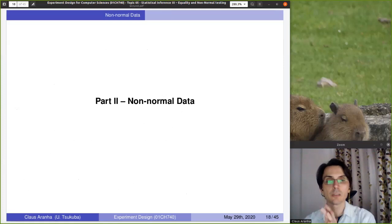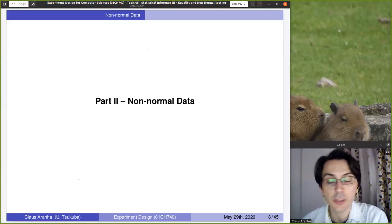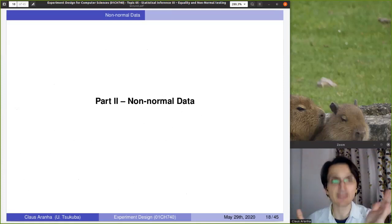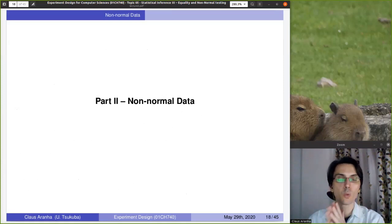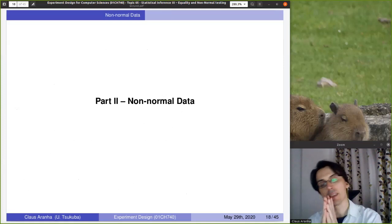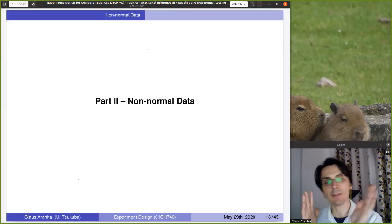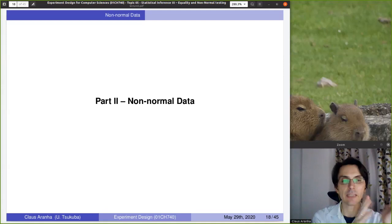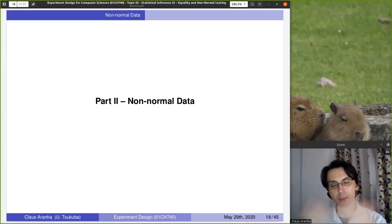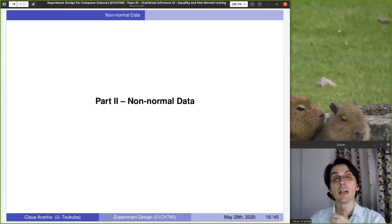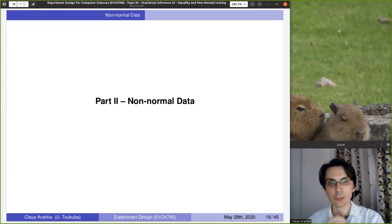This was the first part of the lecture. To summarize: to do an equivalence test, one simple way is to use two one-sided tests. We do one test to see that the value is above the key value minus delta, and another test to show that the value is below the key value plus delta. If both tests reject their null hypotheses, it means it's not below the threshold and not above the threshold — so it must be equivalent to the value of interest. We're going to take a quick break and then come back for the second part of the lecture: non-normal data.